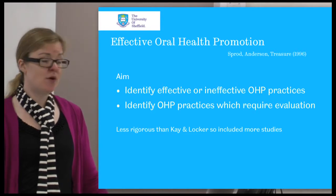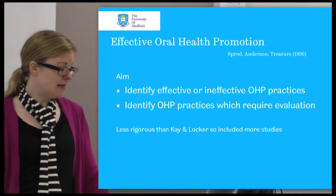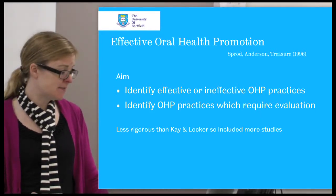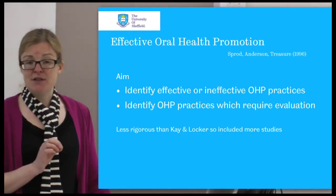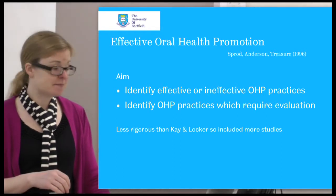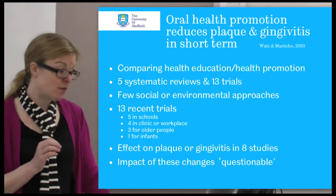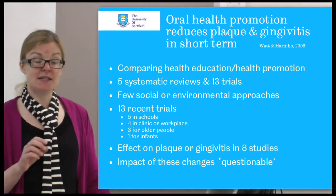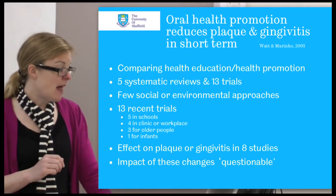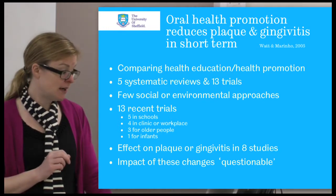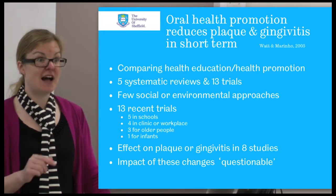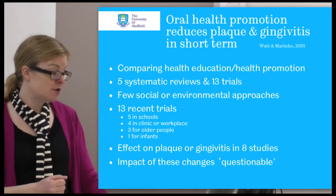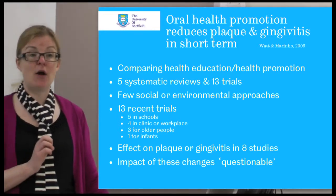The second one was done around the same time and had slightly broader aims - about effective and ineffective oral health promotion practices. They were a little bit less rigorous than the first one, so that more studies could be included. And there's a third one - a more recent one by Richard Watt and Merino, the same Valerio Merino who did a lot of the fluoride varnish Cochrane reviews. They were looking specifically at plaque and gingivitis in the short term, and their systematic review included five systematic reviews and 13 trials.